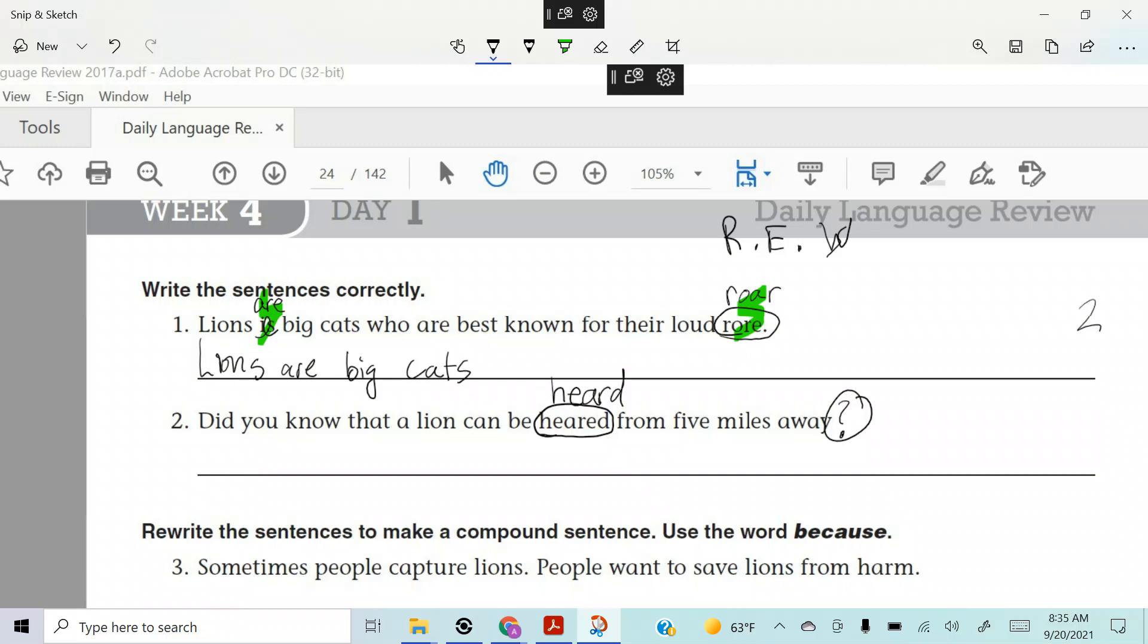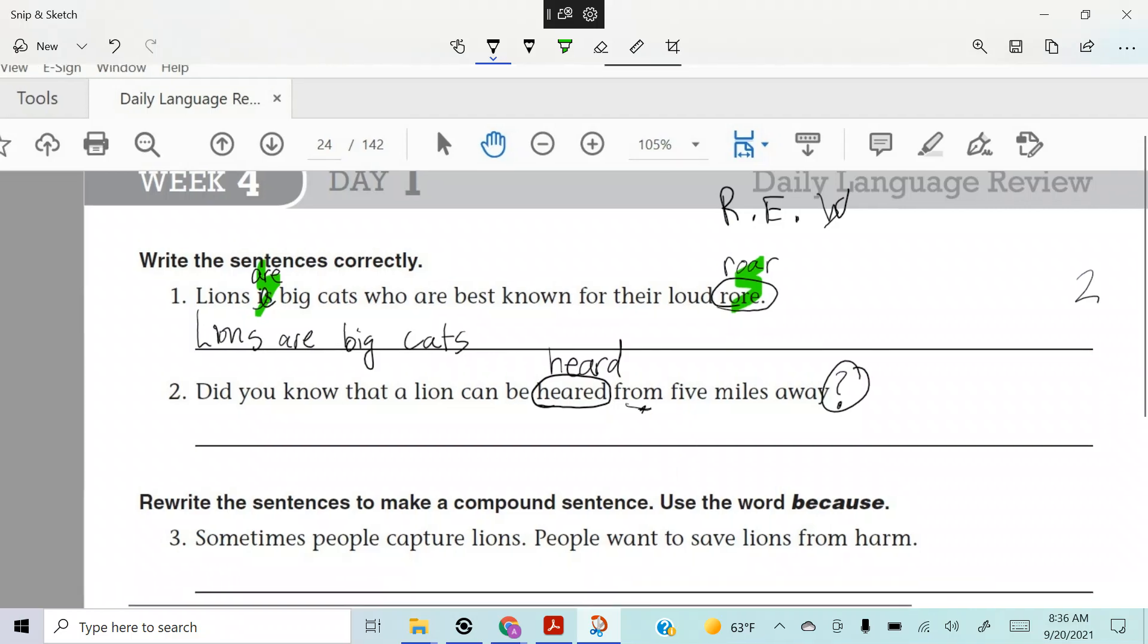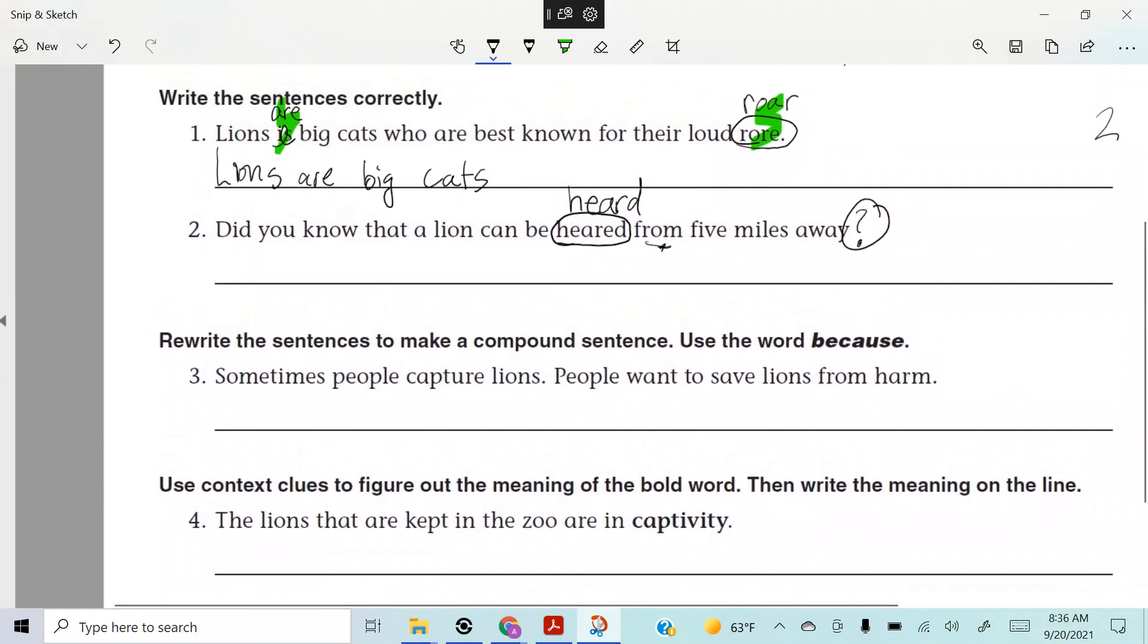Because did you know that a lion can be heard from five miles away? I like the word from. I guess I might not take away, but we'll keep that in there. I don't think it's grammatically incorrect, but I like the word from in there.